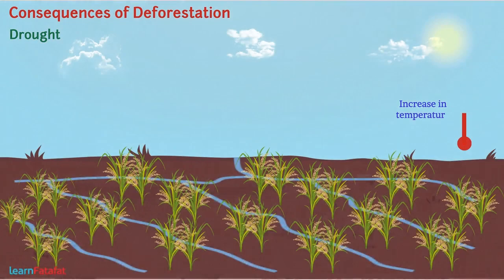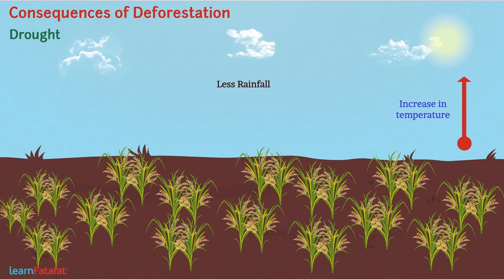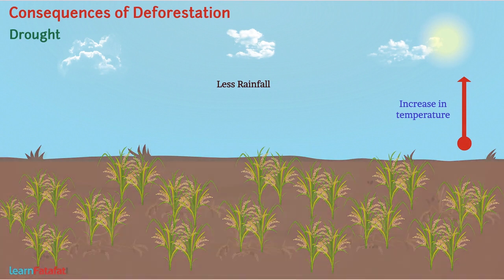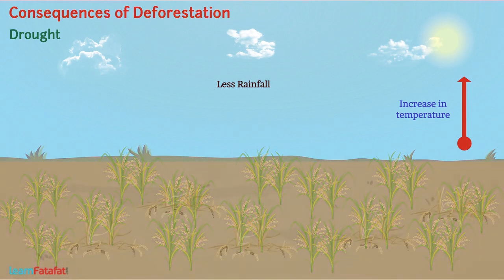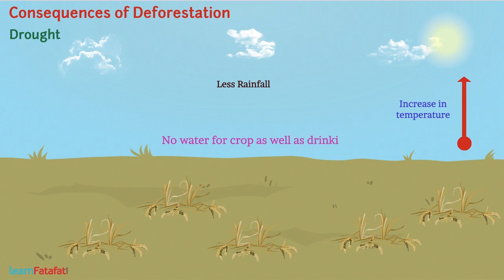An increase in temperature disturbs the water cycle. Therefore, there is less rainfall, which leads to drought — a condition when there is no water for crops as well as for drinking.